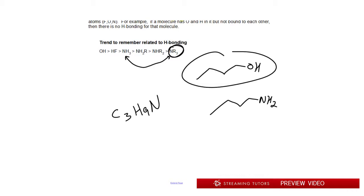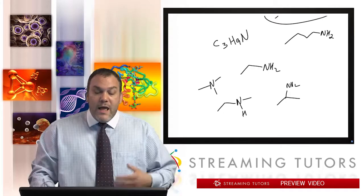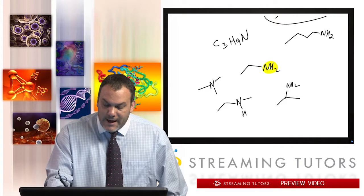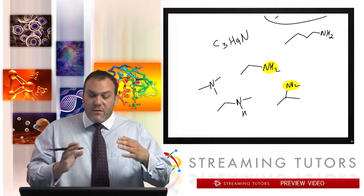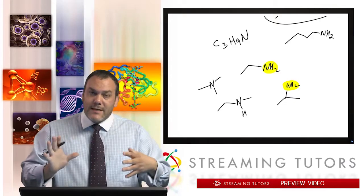For example, with the formula C3H9N — which has no double bonds — you can have different structural isomers: a straight chain with NH2, a branched version with NH2, a structure where nitrogen has one branch, or nitrogen with three branches. If asked which has the highest boiling point, you'd be stuck between the two with the same hydrogen bonding count. The one without branching wins because branching reduces van der Waals interactions by preventing molecules from packing together efficiently.